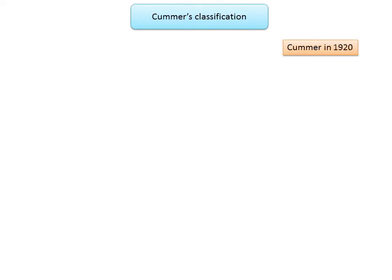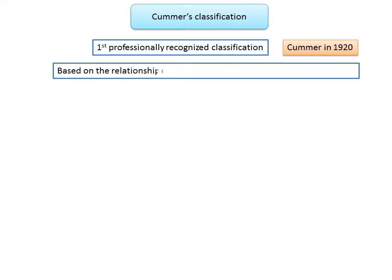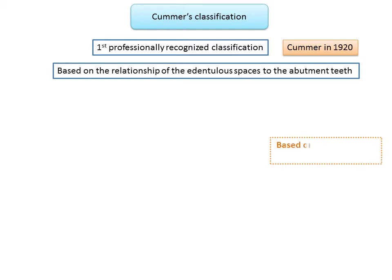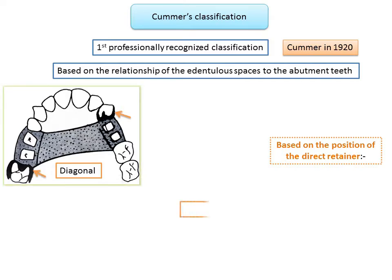Commer's classification is the first professionally recognized classification, introduced by Commer in 1920. This classification is based on the relationship of the edentulous spaces to the abutment teeth. According to him, partial dentures can be classified into four types based on the position of the direct retainers: diagonal, wherein two direct retainers are diagonally opposite to one another; and diametric, wherein two direct retainers are diametrically opposite to one another.